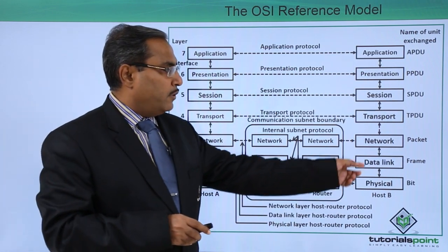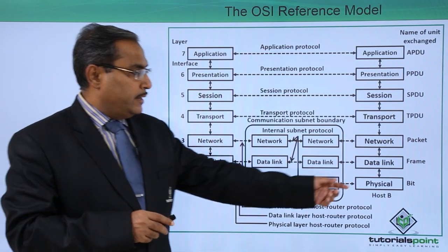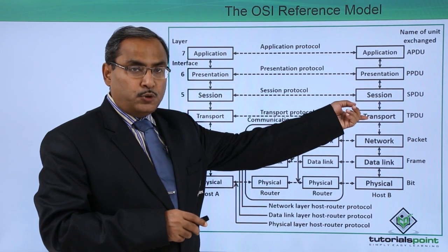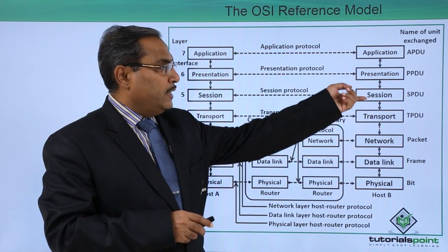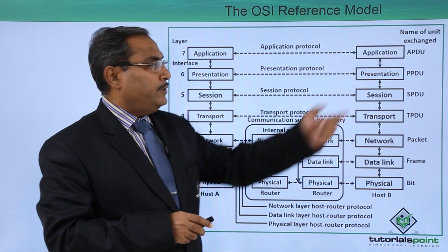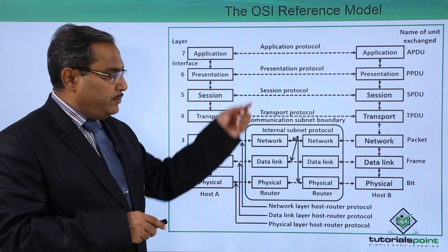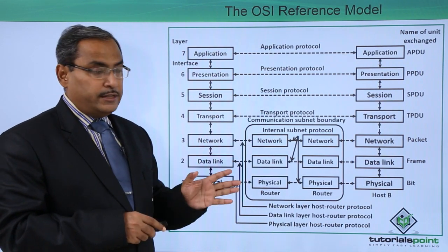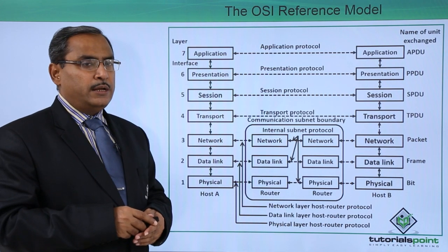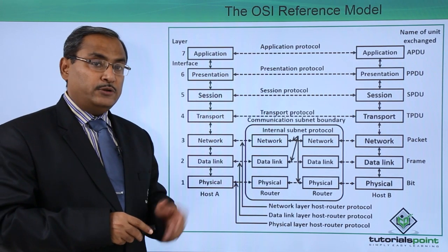For each and every layer, there is a respective data transfer unit. At the physical layer it is a bit, at the data link layer it is a frame, at the network layer it is a packet, and there is a transport protocol data unit, a session protocol data unit, a presentation protocol data unit, and an application protocol data unit. This diagram and the order of layers are to be remembered.